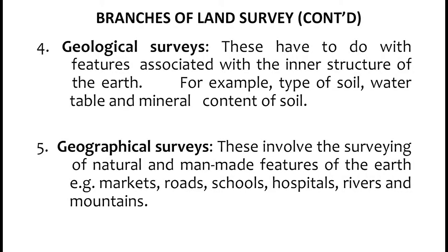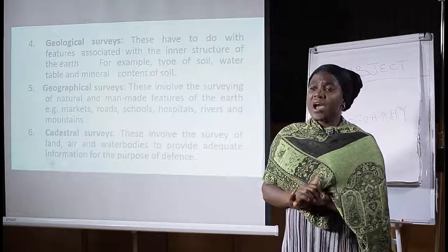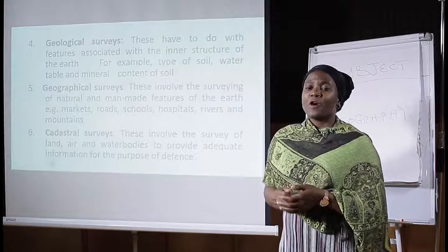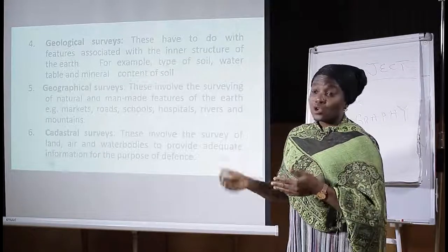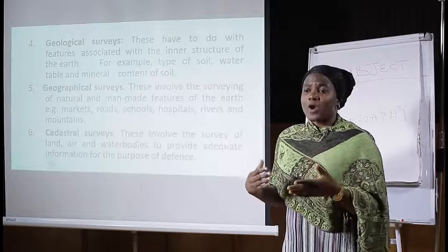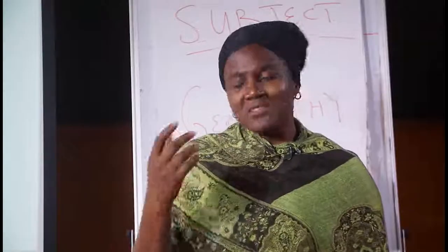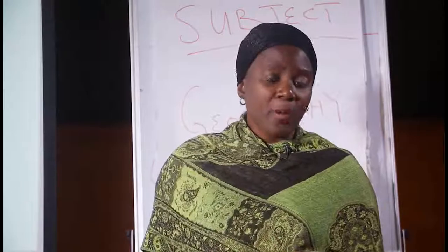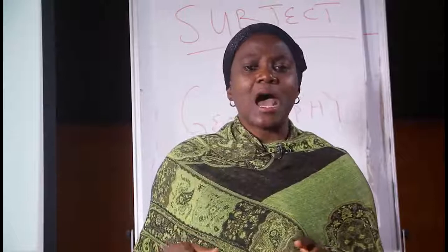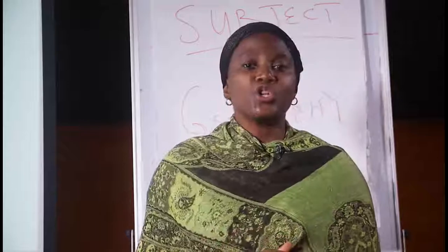Number five, geographical surveys. This is a survey of geography which has to do with us directly. It involves the surveying of natural and man-made features of the earth, which includes markets, roads, schools, hospitals, rivers, and mountains. If you remember from our SS1 work on introduction to geography, we said it involves the study of man and his immediate environment. So geographical surveys has to do with man and his immediate environment — everything that has to do with man, from markets and roads to schools, hospitals, rivers, and mountains.